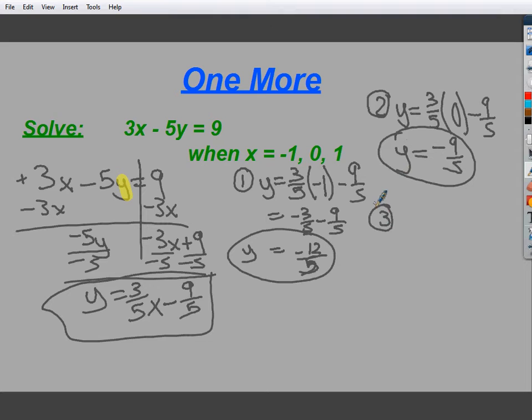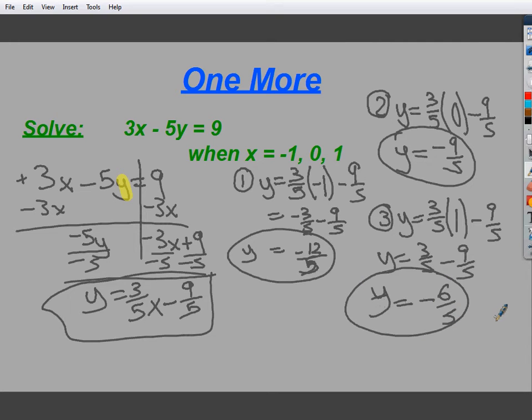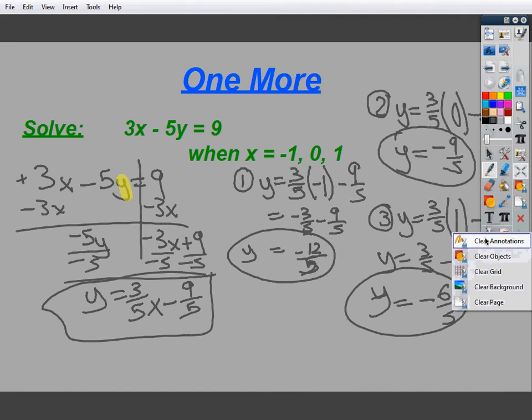And my last one, number 3, y is equal to 3 fifths. This time, it's by positive 1, negative 9 fifths. 3 fifths minus 9 fifths, y is equal to negative 6 over 5. So, essentially, I'm getting my variable that I'm not given by itself, and then plugging in the values that I am given, finding an answer. Pretty easy stuff, mostly.